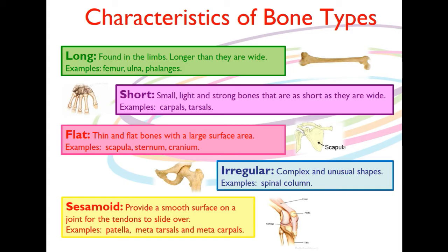Moving on to flat bones: flat bones are thin and have a really big surface area. Examples are the scapula, the sternum, and the cranium. Most of the time a flat bone will protect a vital organ — the cranium protects the skull, the sternum protects the heart and some of the lungs, and the scapula protects the lungs from blows from behind.